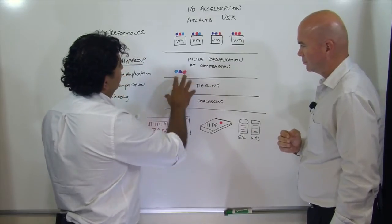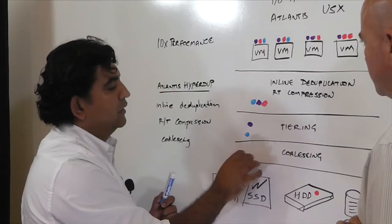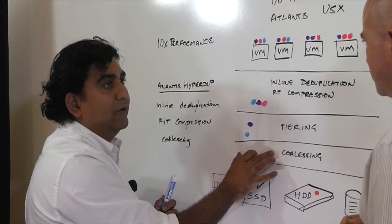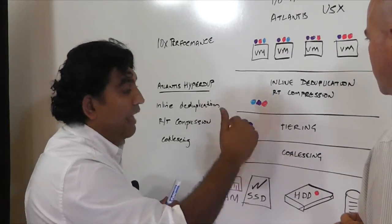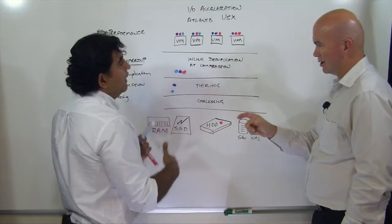So what we do in the coalesce is aggregate blocks over here, try and grow the size to anywhere from 128K to 512K, and then write them down. So you're writing bigger chunks. Writing bigger chunks.